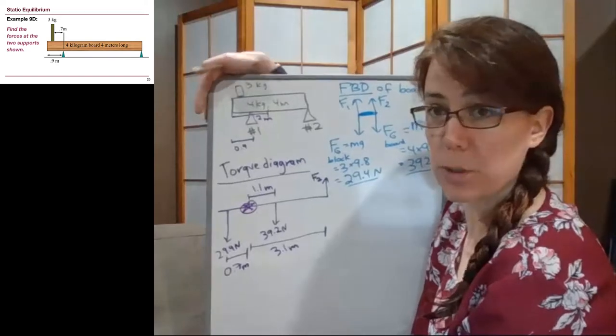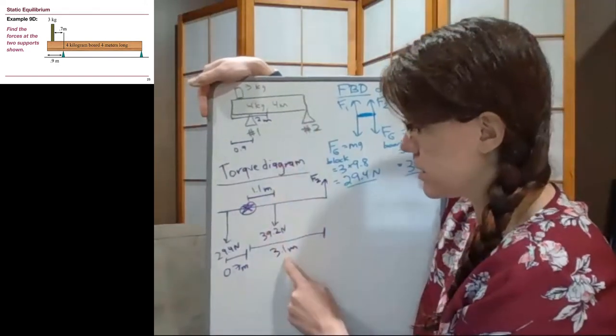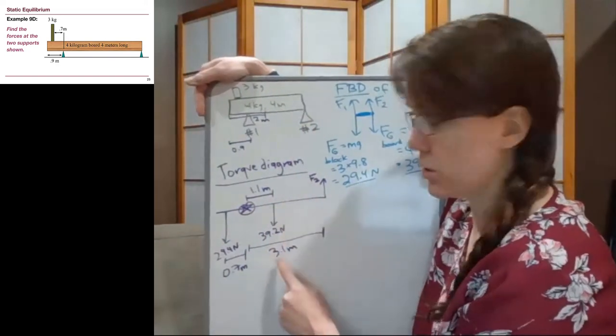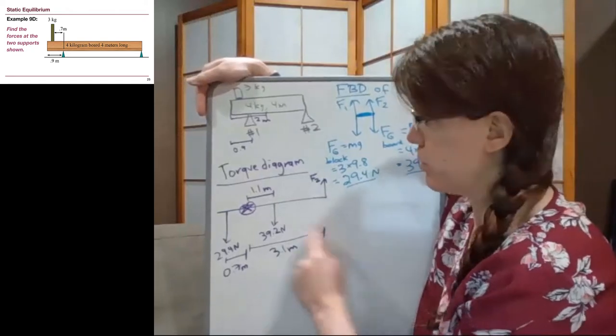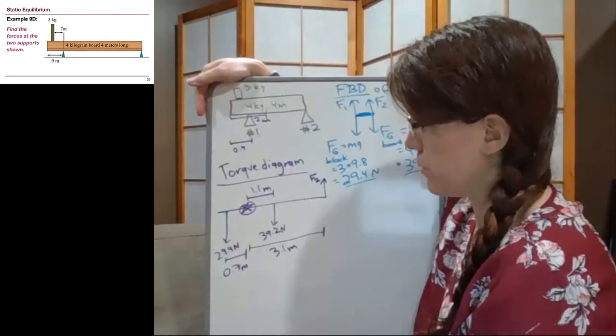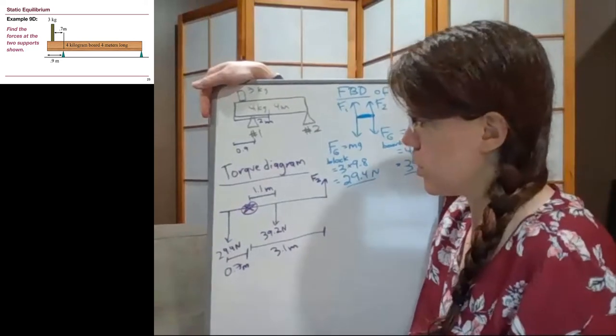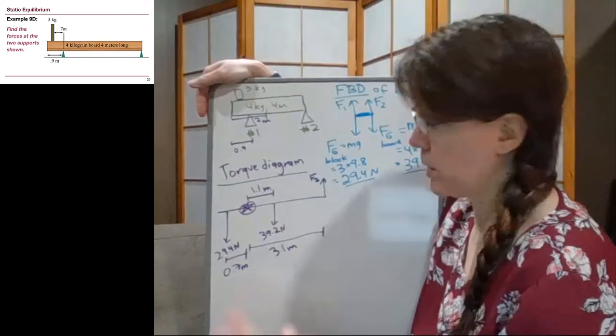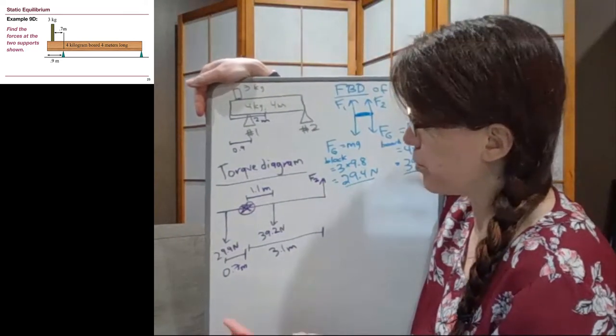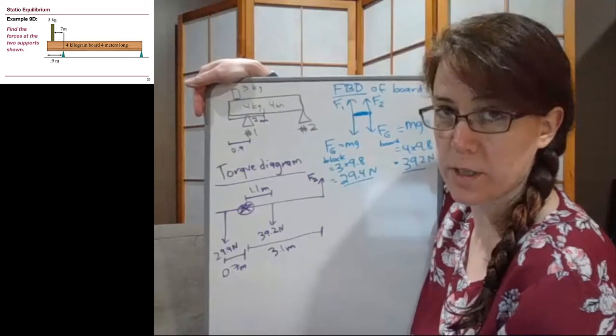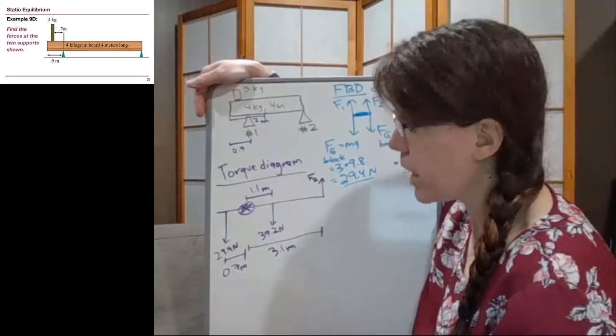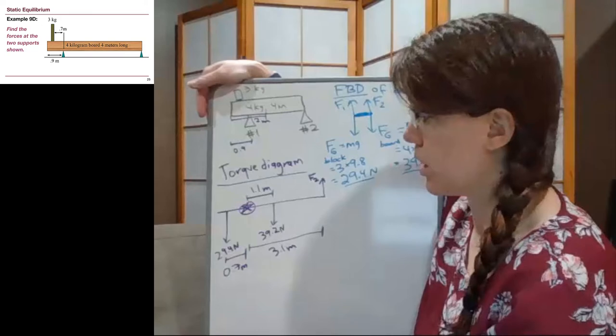And if you chose to put the axis over here at the end, the forces, the supports are still separated by 3.1 meters, no matter where that axis is for the pair. Okay, so step 1, the board, step 2, the axis, step 3, the forces, and step 4, the distances.